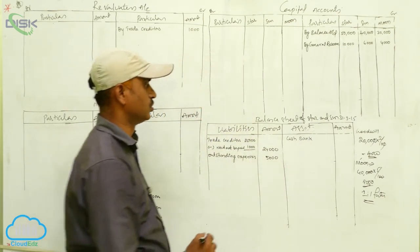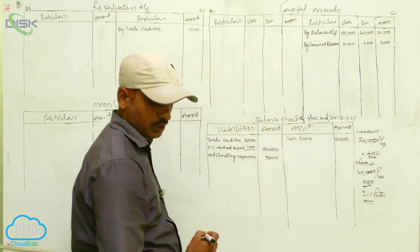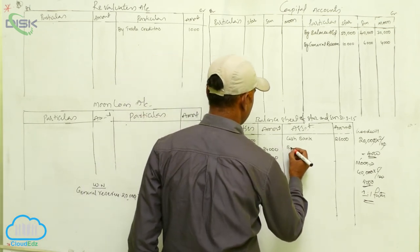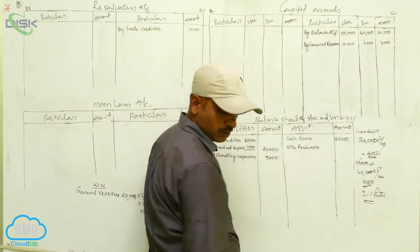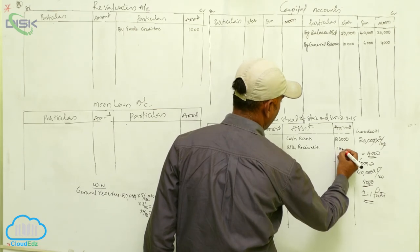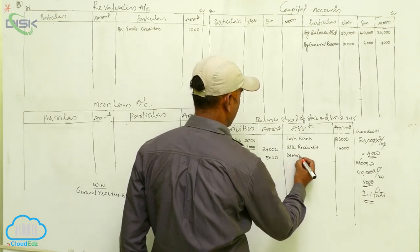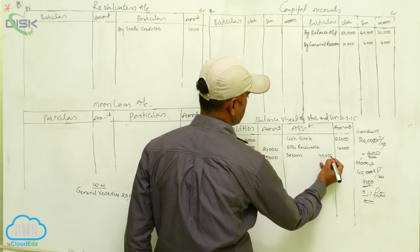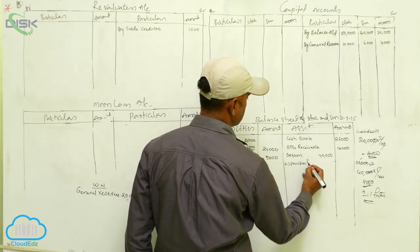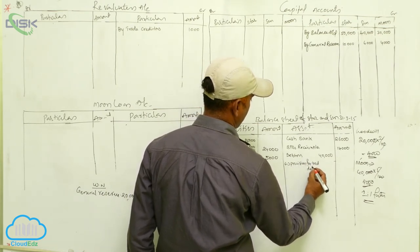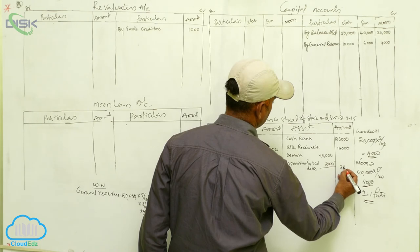Cash and bank: ₹26,000 — no adjustment. Bills receivable: ₹14,000 — no adjustment. Debtors: ₹40,000 with an adjustment for provision for bad debts. Provision for bad debts is ₹2,000, so net debtors = ₹40,000 minus ₹2,000 = ₹38,000.